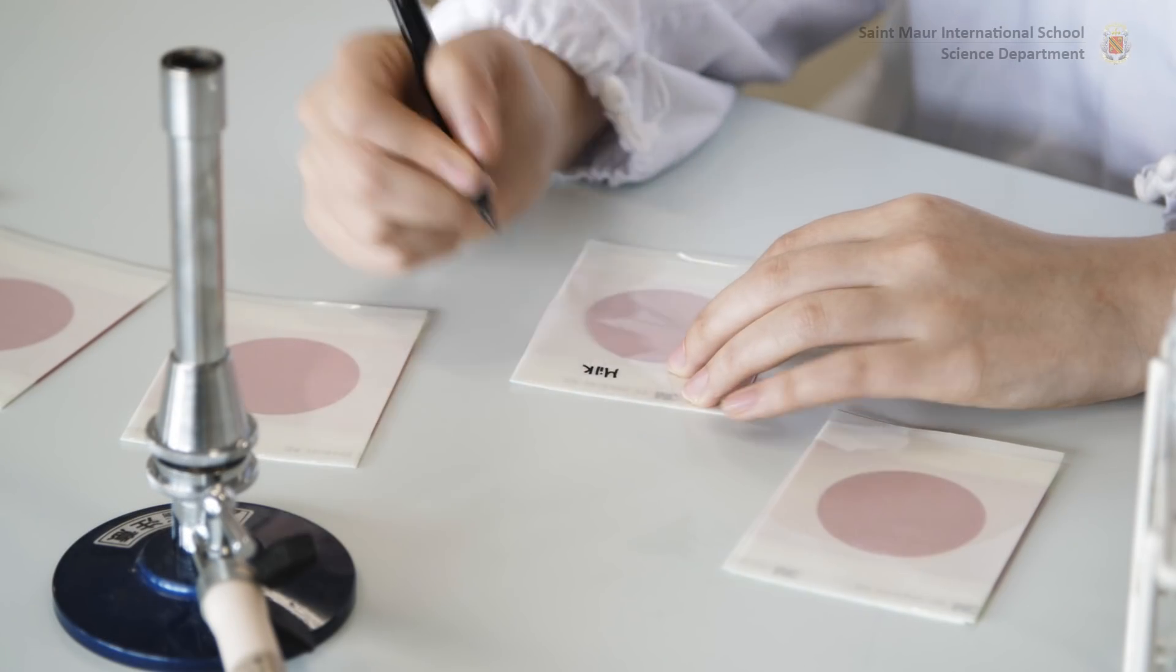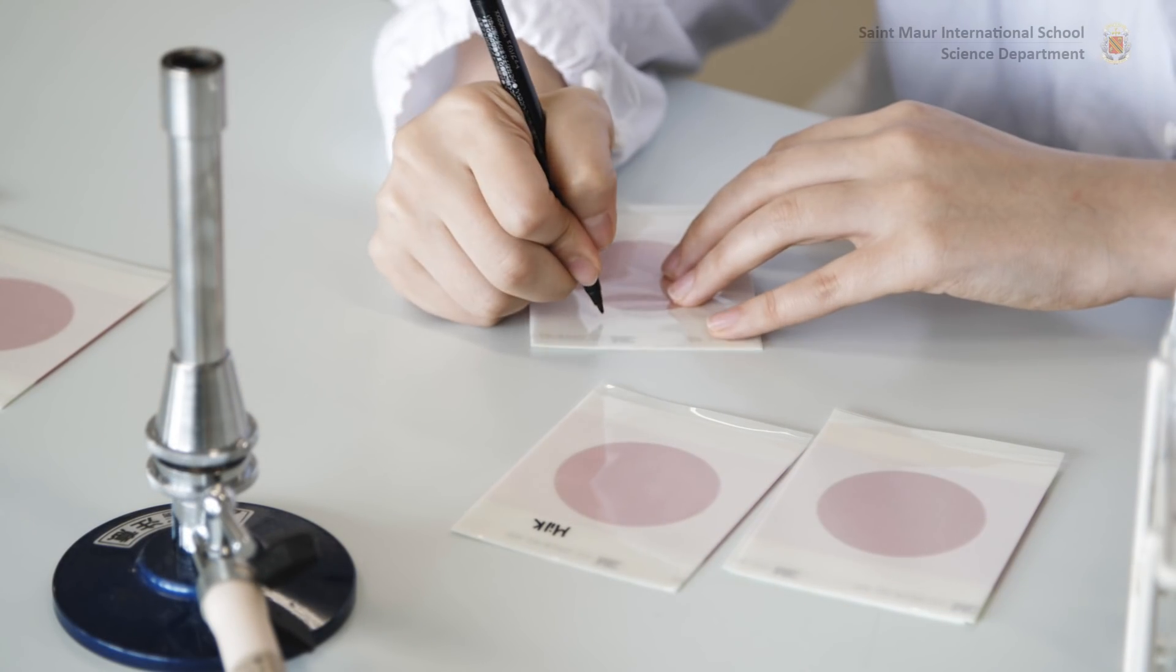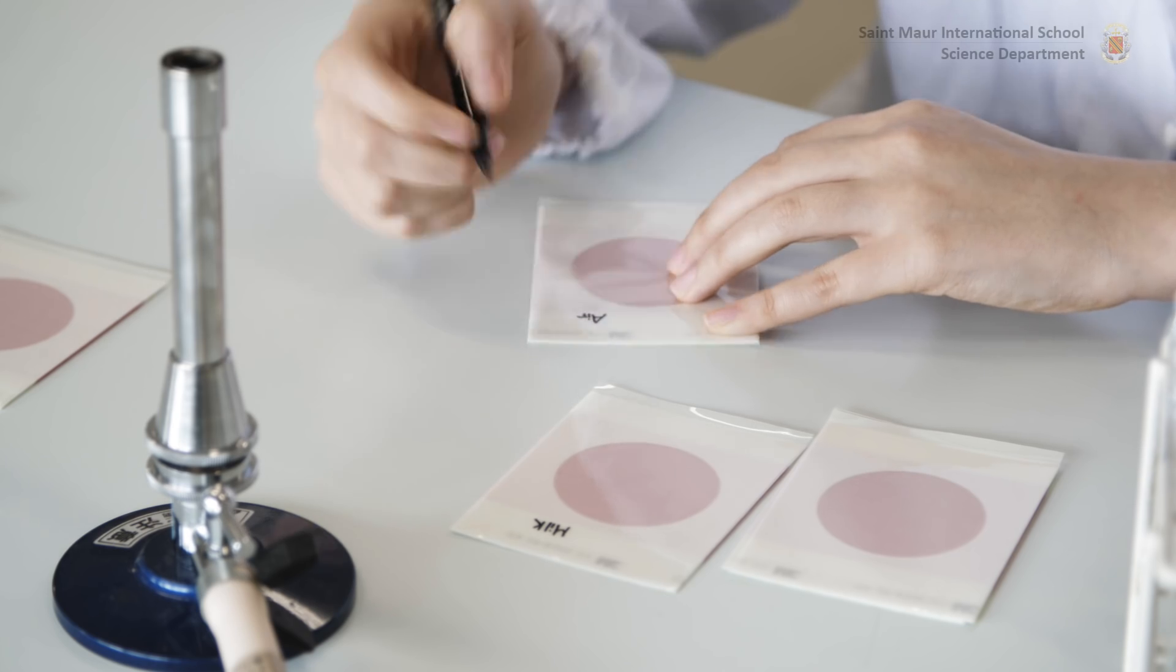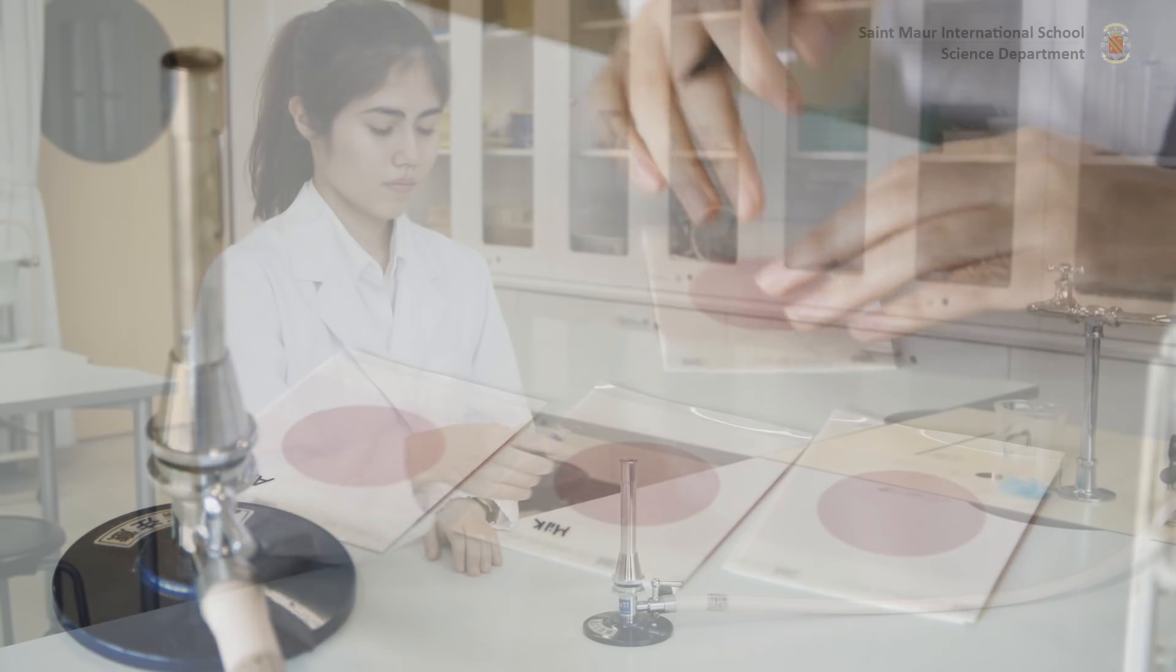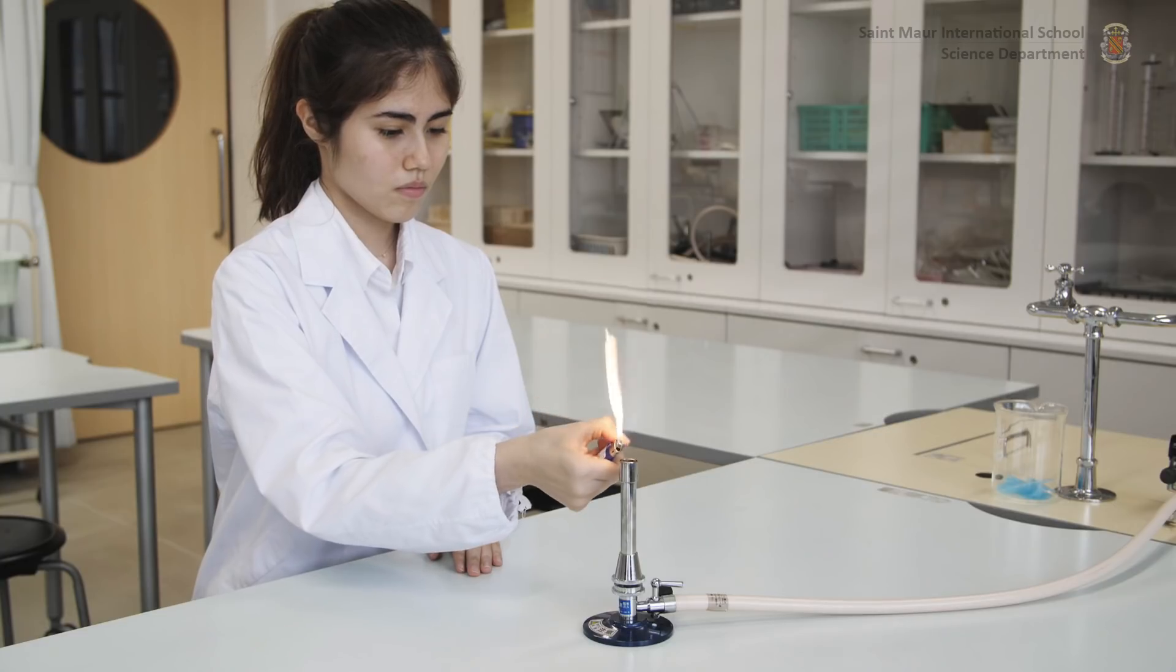Make sure to label the covers of the Petrifilms prior to inoculation. Light a Bunsen burner to establish a cone of sterility.